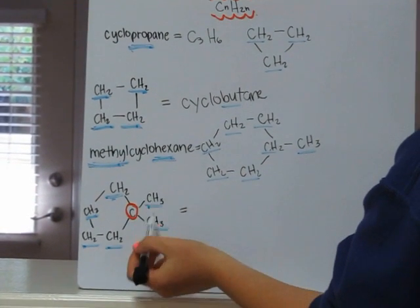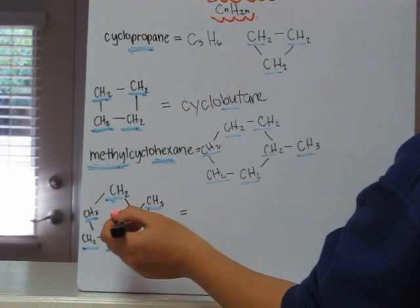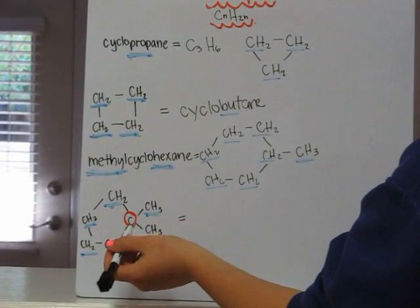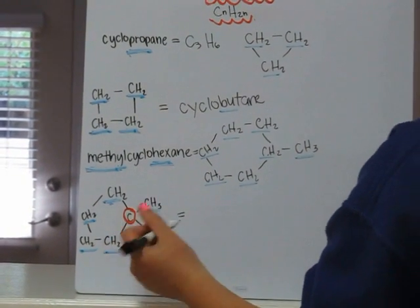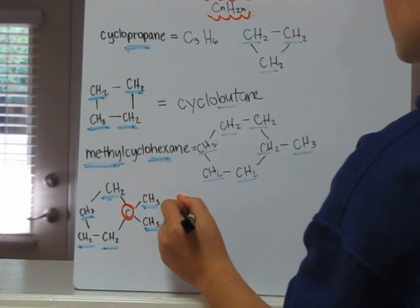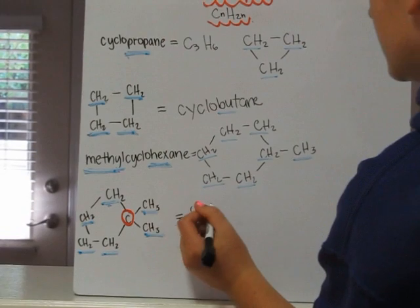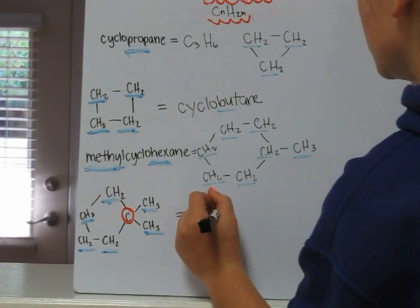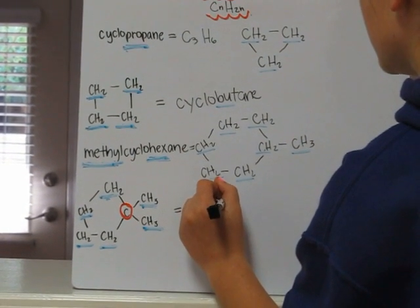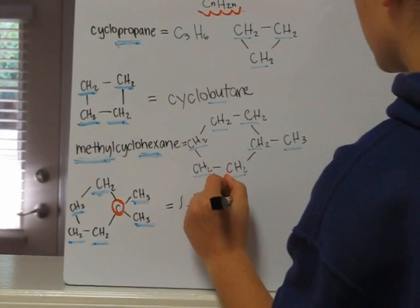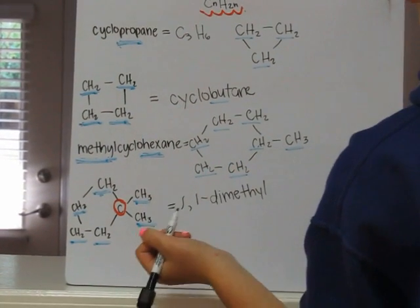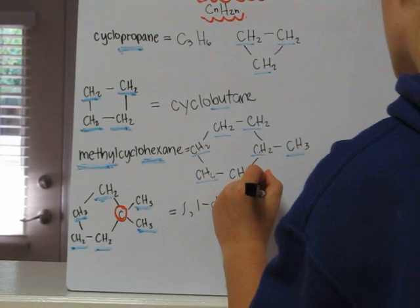Now we've got two methyls on one spot. To write it, you would do one to show the position of one methyl, and one to show the position of the next methyl. And because you've got two, you would use the prefix di. So you would have dimethyl, and then cyclopentane for the chain.